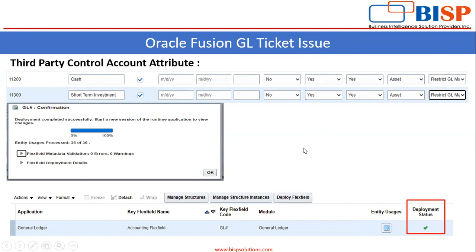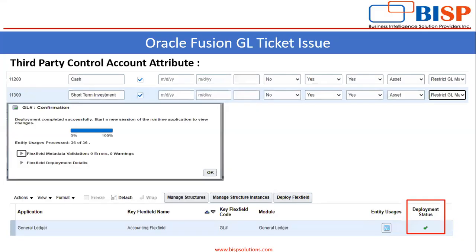Now when I try to create the manual journal using these values, in the list of values I would not be able to see these values because I have applied the restriction on them. After applying the restriction, you have to deploy the flex field, and the deployment status should be successful. Now we will move to the application and try to create the manual journal with these values.